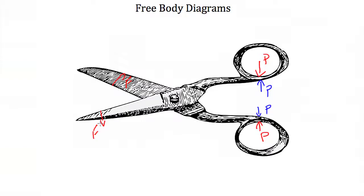This free body diagram only cares about the forces our hands are putting on the scissors — not the forces the scissors are putting on our hands. So now we have a picture of the scissors that includes only the forces the outside world puts on them. This is the free body diagram for the scissors: the forces from the tube and from our hands are represented as arrows.